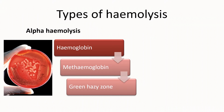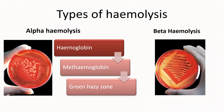First is alpha hemolysis, wherein the hemoglobin is broken down to form met hemoglobin, which gives you a green hazy zone around the colonies. This is a kind of partial degradation of the blood cells.